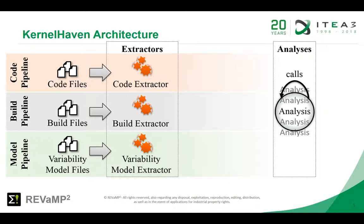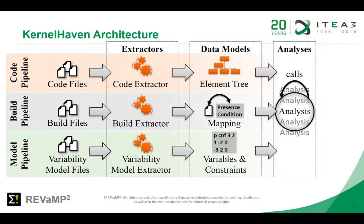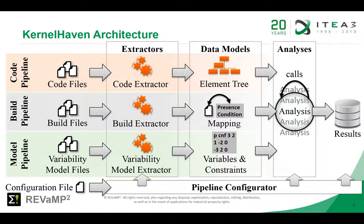The information is stored in data models which serve as an input for the desired analysis. KernelHaven stores its results in different table-based formats. An important aspect of KernelHaven is that it allows the configuration of the extraction, the analysis, and the output format.